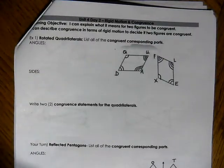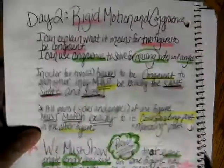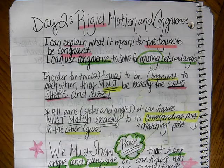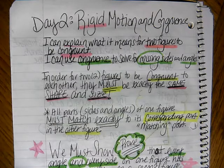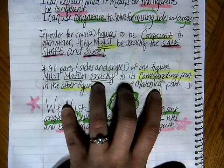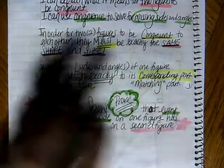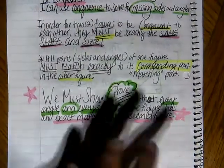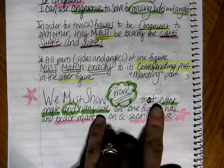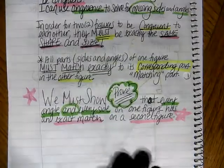Hi everyone, for today's lesson we are going to continue with our discussion on rigid motion and congruence. Before we get started, please make sure that you have completed the discussion notes for Unit 4, Day 2, Rigid Motion. In this lesson, figures are considered congruent when the shape and size are exactly the same, and one figure's parts must match or correspond to another figure's parts. We will be analyzing figures and showing that every angle and every side that match up are indeed congruent to each other.